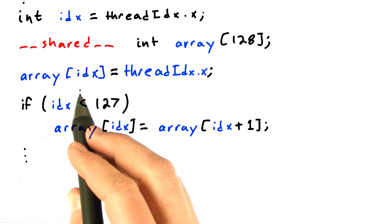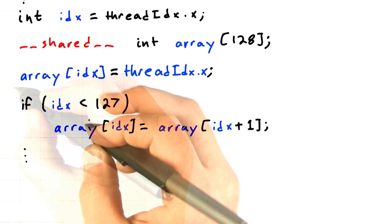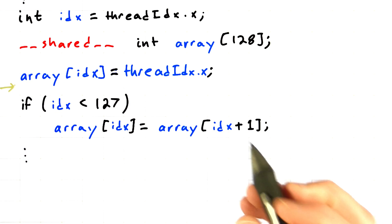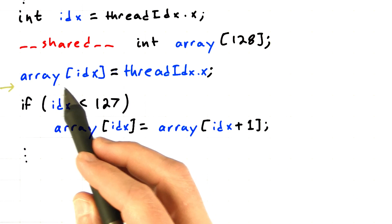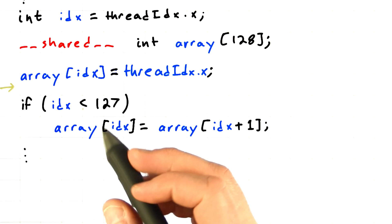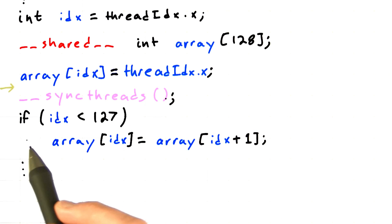This operation is a write, so we need a barrier after this write completes in order to make sure that nobody tries to read from the array until after all of the threads have finished the write operation. So let's insert a barrier here.